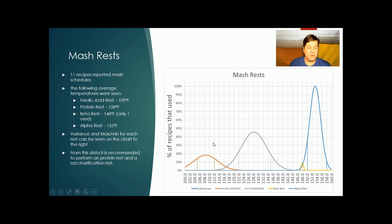On the mash rests, three were prominent. We saw a ferulic acid type rest, maybe for some beers trying to get those banana type esters to emerge. Everyone had a saccharification rest, and there's definitely a protein rest used in 45% of the recipes. This is something I would recommend, and their ranges are included in these dotted lines here. One recipe had a horsegrotz mash schedule where you have your beta and your alpha rests. I wouldn't intend to use for this style a beta alpha mash rest.